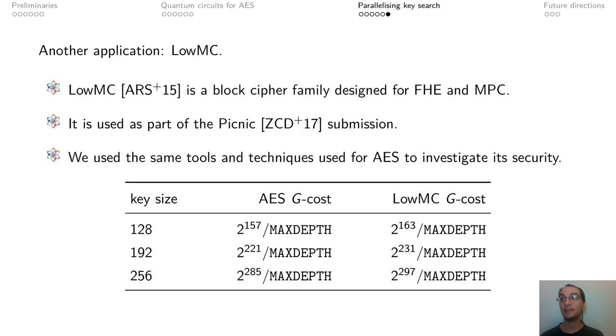We also did a cryptanalysis of LowMC. LowMC is a block cipher family designed for FHE and MPC, and it's designed to have low multiplicative complexity. It is used as part of the Picnic digital signature submission, and since key recovery against LowMC could lead to an attack against Picnic, we costed groverizing key recovery. We used the same techniques, and end up having costs that are superior to AES due mostly to the bigger key expansion circuit. And so, to the best of our knowledge, LowMC is harder to quantumly break than AES in some metric.